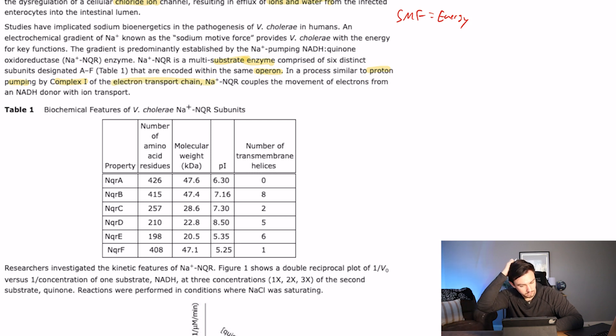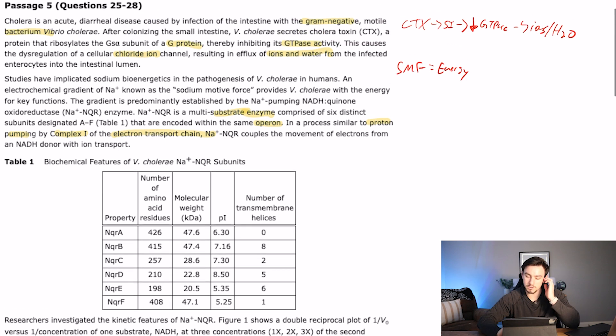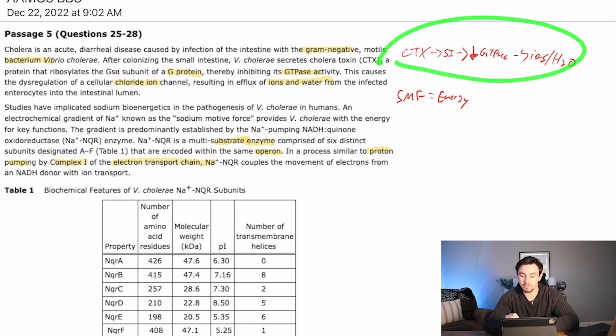Proton pumping, complex one of the electron transport chain, sodium NQR couples the movement of electrons from an... So this makes sense now. So what they're saying is that to do all this stuff, you have to actually have energy. And that energy is going to come from the sodium motive force, and that is due to this sodium NQR. So this pumping out of NADH, similar to the proton pumping in the electron transport chain, is how we get this energy. So this gives us the energy. The energy allows us to make humans poop. That's pretty much what they're saying.